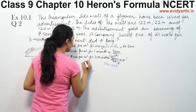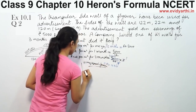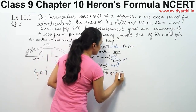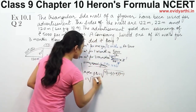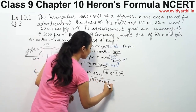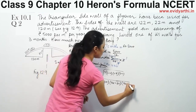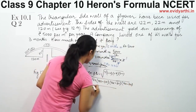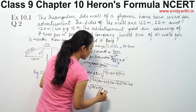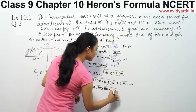Using Heron's formula, the area of the triangle is √(S × (S−A) × (S−B) × (S−C)). That is √(132 × (132−122) × (132−22) × (132−120)), which gives √(132 × 10 × 110 × 12).